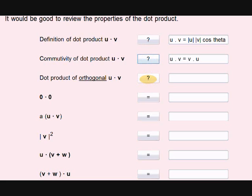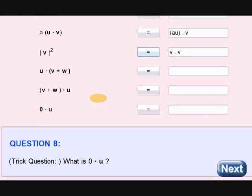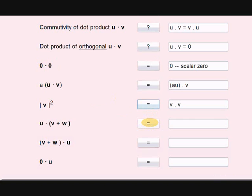What is A into U vector dot V vector? Very good. What is V squared? V dot V, V vector dot V vector. Very good. What is U into V vector plus W vector? U into V vector plus U into W vector. Beautiful. U into V vector plus V into U vector plus W into U vector.